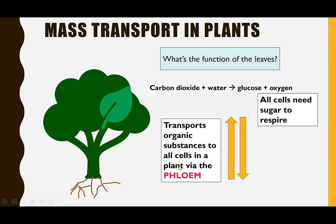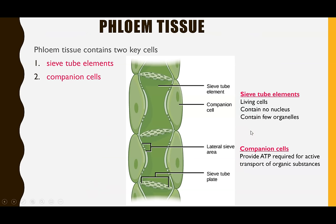The phloem is responsible for transporting the organic substances made in the leaf during photosynthesis up and down the plant, so that all of the cells have a source. Phloem tissue is made up of two key cells: sieve tube elements and companion cells.